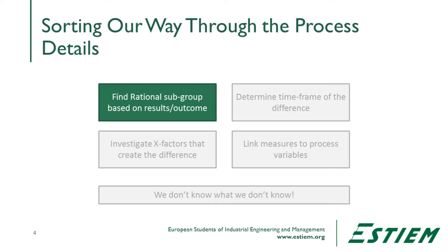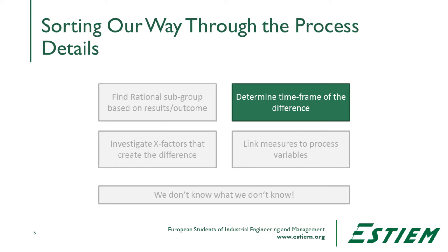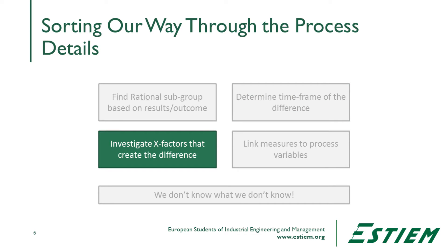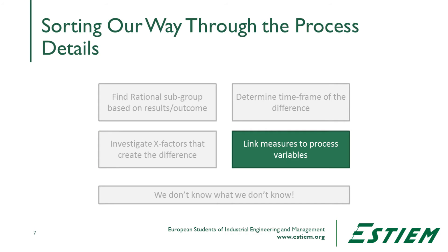We start with this process beginning with Y, the output variables. We want to understand within that Y performance measure what are the different rational subgroups — the things we can clearly identify that may change as a result of the way this process is performing. We also need to determine what's the time frame in which we observe that difference, because we want to take a look at data just from that sample when evaluating Bob and Wow. We then want to investigate what X factors create this observed difference in the outcome, and link those output measures to the process variables — the X's. What we'll have then done is formulated the equation: Y is a function of X.